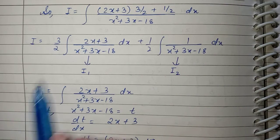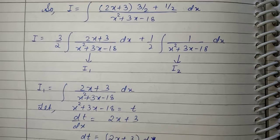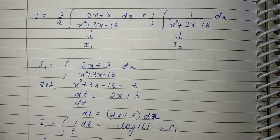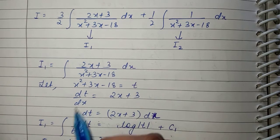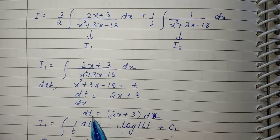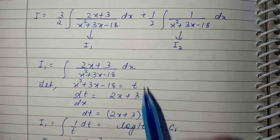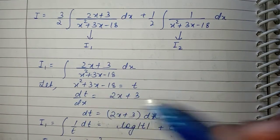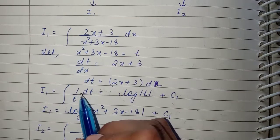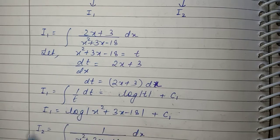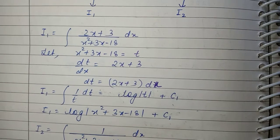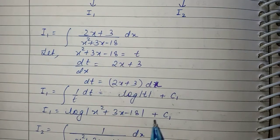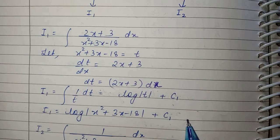For I1, we let the denominator equal t. Differentiating both sides gives dt = (2x+3) dx. Substituting, I1 becomes ∫(1/t) dt, whose integration is log|t| + C1. Substituting back t = x²+3x-18, so I1 = log|x²+3x-18| + C1.